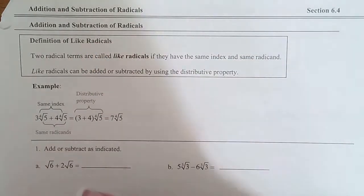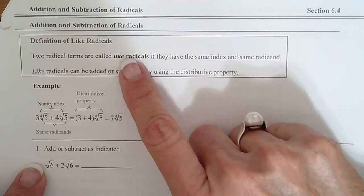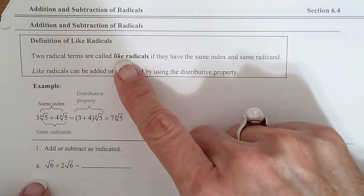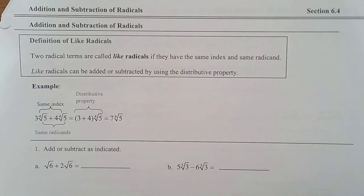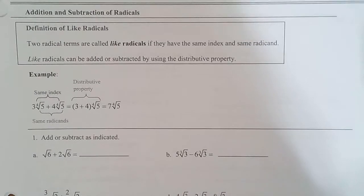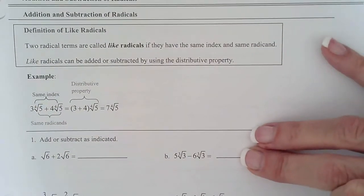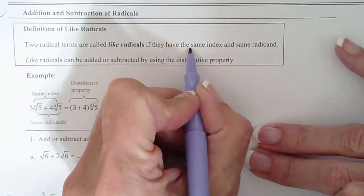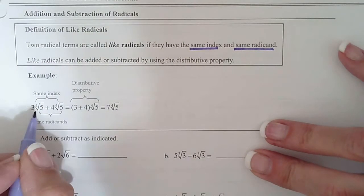So remember when we learned addition and subtraction with variables, you can only add like terms? Well, when you're adding and subtracting radicals, you can only add like radicals. So here's the definition of like radicals. I'm going to turn the paper just a little bit so I can write on it. So like radicals must have the same index and the same radicand. Remember, index is the number in the radical. Radicand is what's underneath.